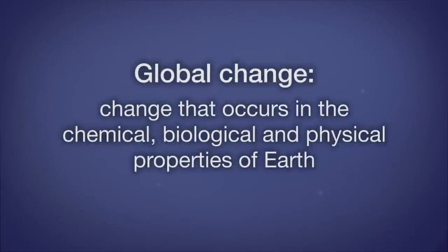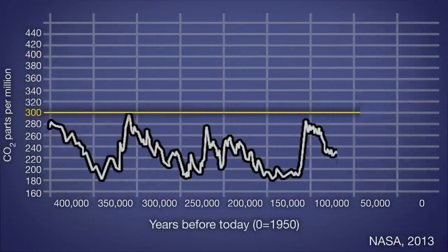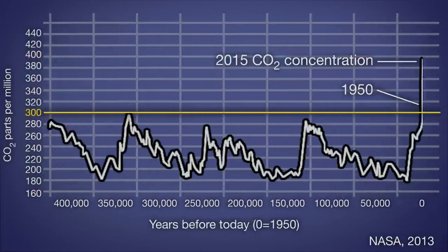We have identified that global change is change that occurs in the chemical, biological, and physical properties of Earth. Global change is natural and has been occurring for hundreds of millions of years. But human-induced change is more recent and is primarily due to the introduction of additional greenhouse gases to the atmosphere.